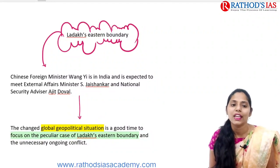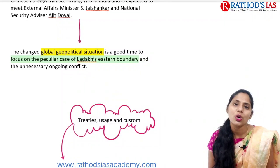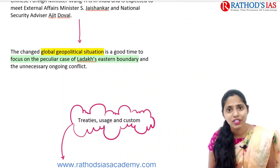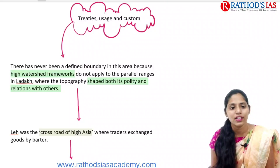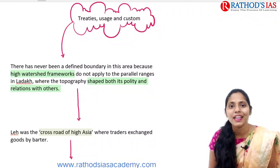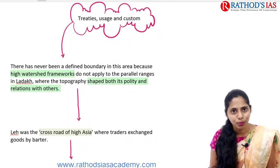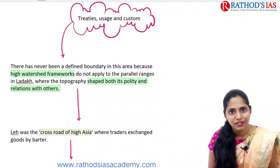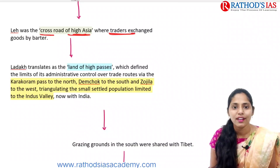Geopolitically, there are many changes in the political situation, and in the Ladakh eastern boundary there is ongoing confrontation. Regarding treaties, usage, and customs in this eastern Ladakh region, there has never been a defined boundary in this area because of rugged topography. This difficult topography has shaped both the polity and relations with other countries. Leh was the crossroad of high Asia where traders exchanged goods by barter — exchanging goods in return for other goods.